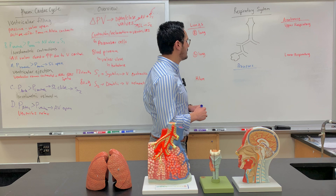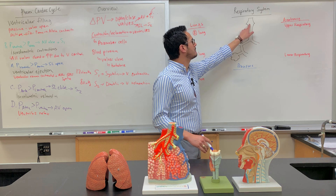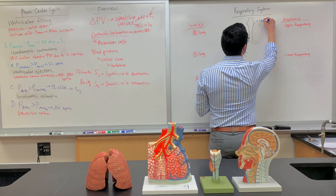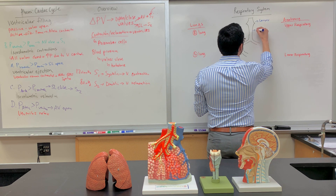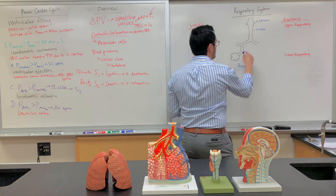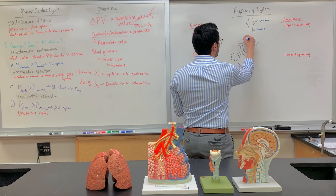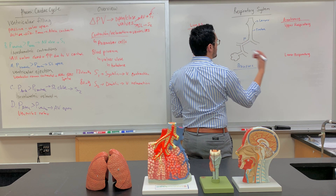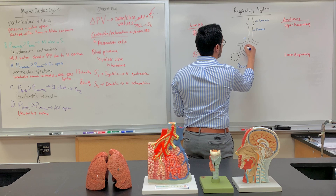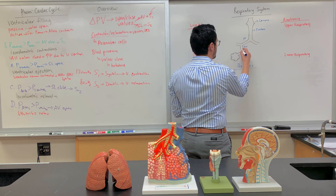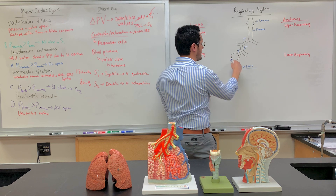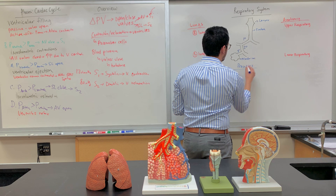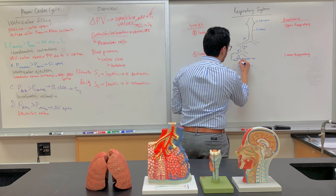The first thing I want to show you is what's here on the board. So this is the larynx, this is the trachea, and then these are the bronchi. The branching starts as primary, then secondary, and once it branches again it becomes tertiary. And then these sacs here are known as the alveolar sac, and each individual one is known as the alveoli.